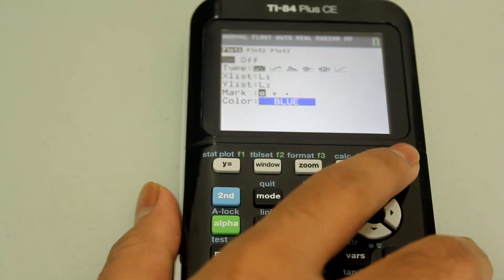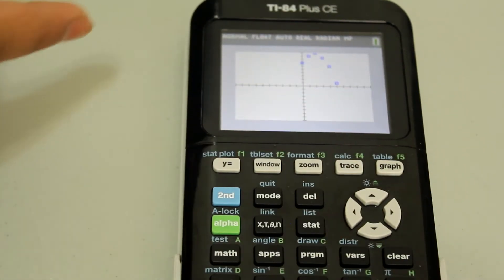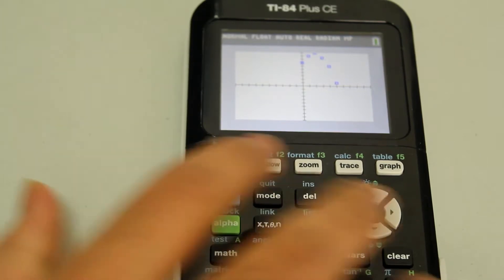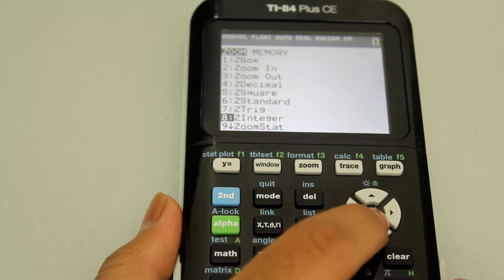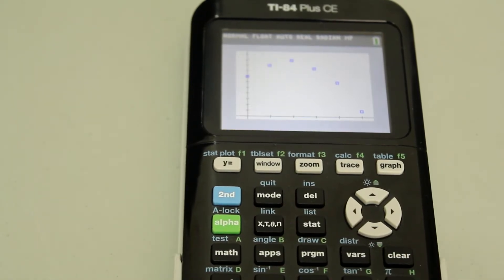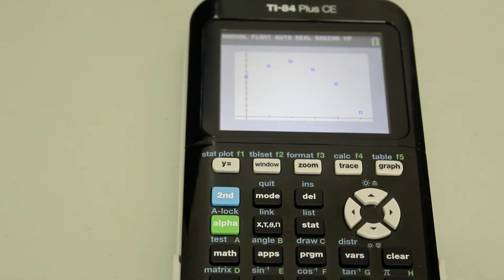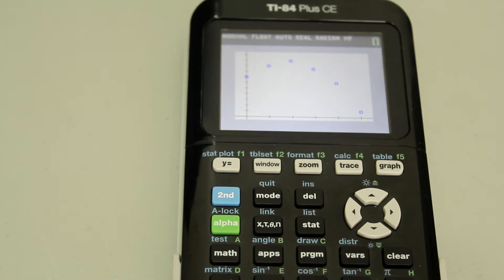Now if you go into graph, you see that you get your plotted points. And you can go to zoom and zoom stat and that will fit your graph on there for you. But now we want the curve or the parabola that goes with this.